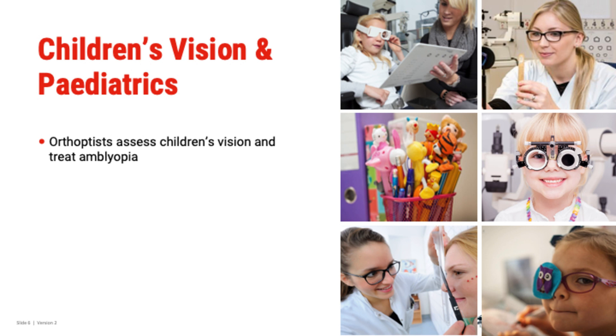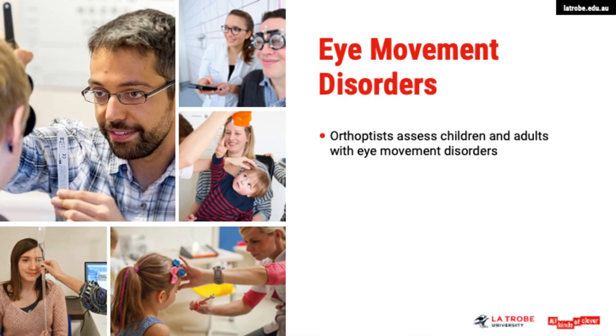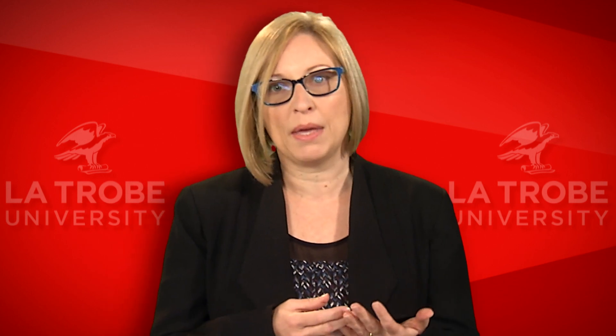A really fun area that orthoptists can work in is children's vision and paediatrics. Orthoptists assess children's vision and treat amblyopia in this setting. This is linked to the assessment of eye movement disorders — not just in children but in adults as well, which is a very specific orthoptic task. Another fantastic area is working with people with vision impairment in a low vision rehabilitation setting, helping patients remain independent in their lives.